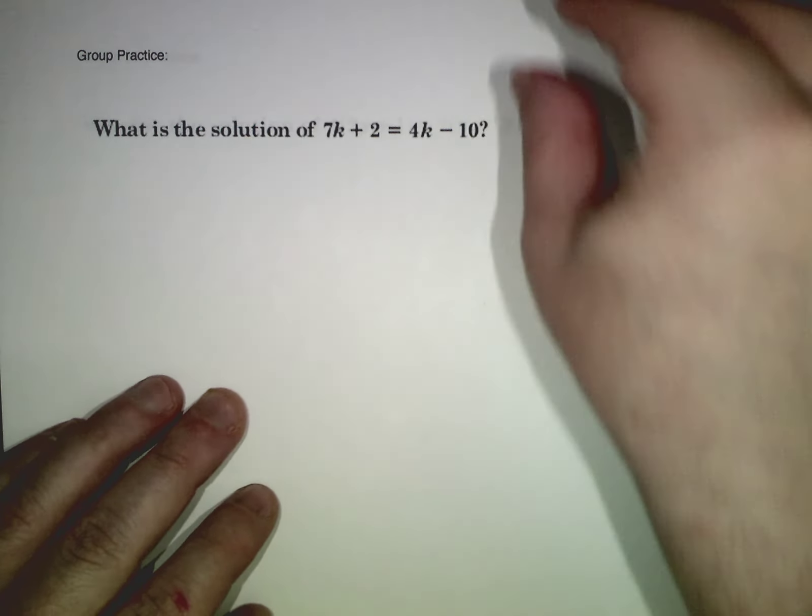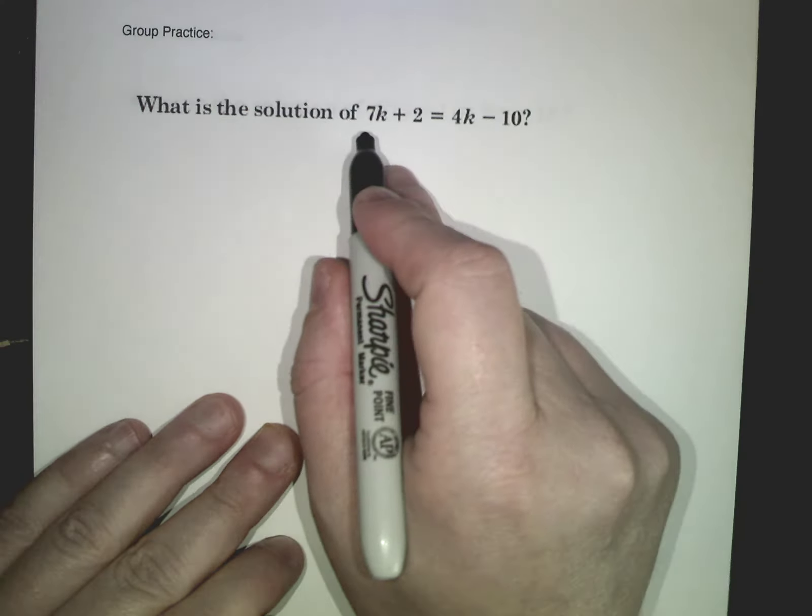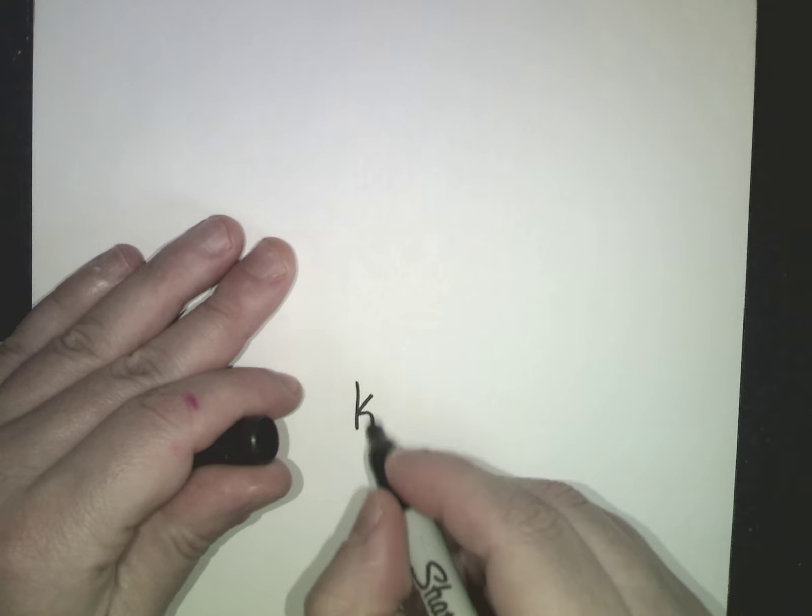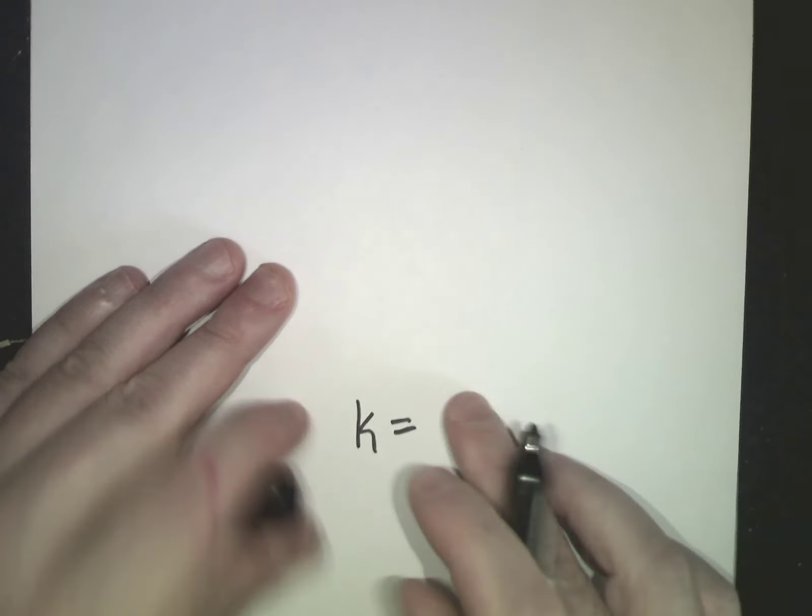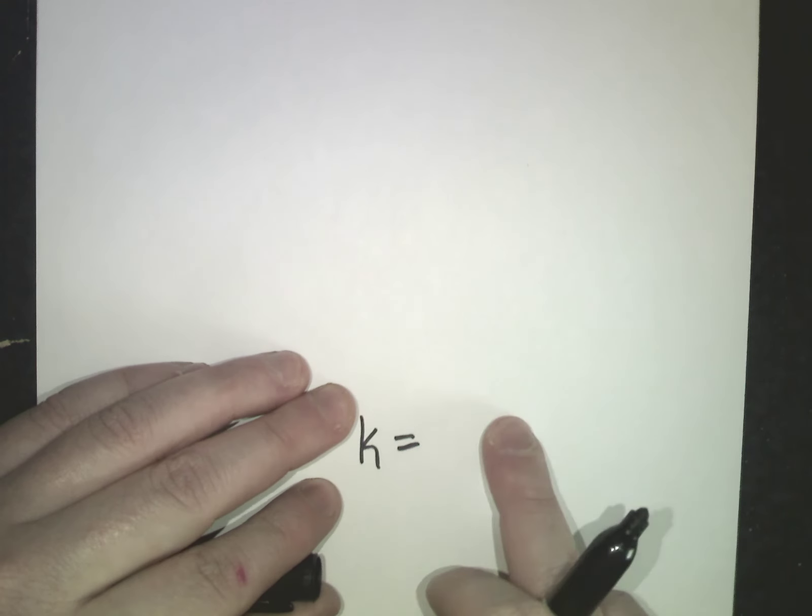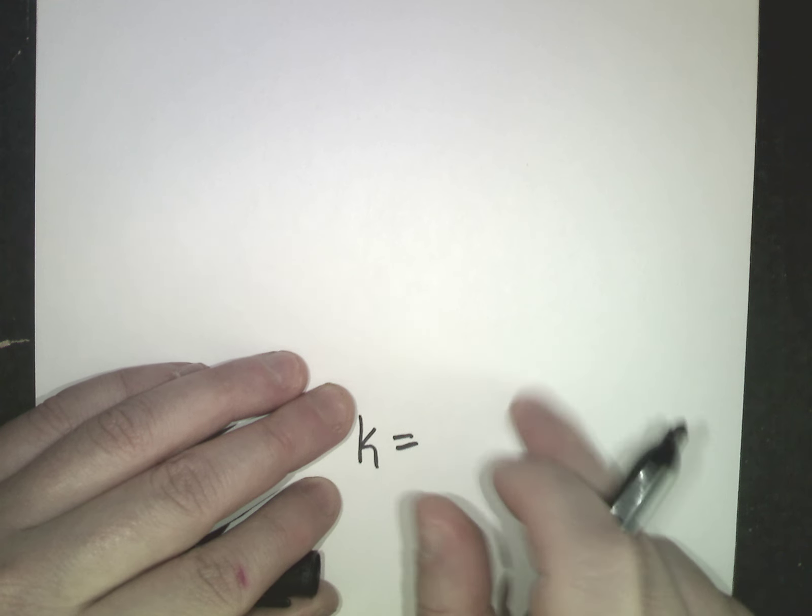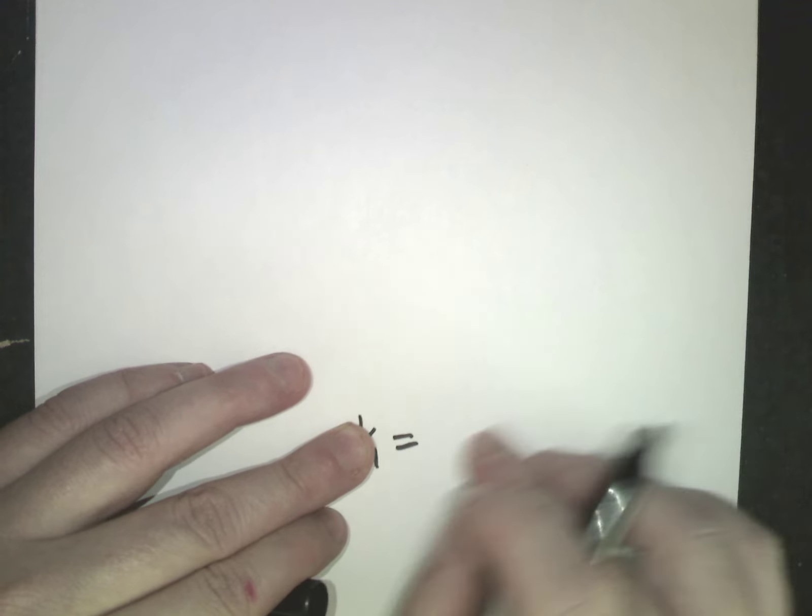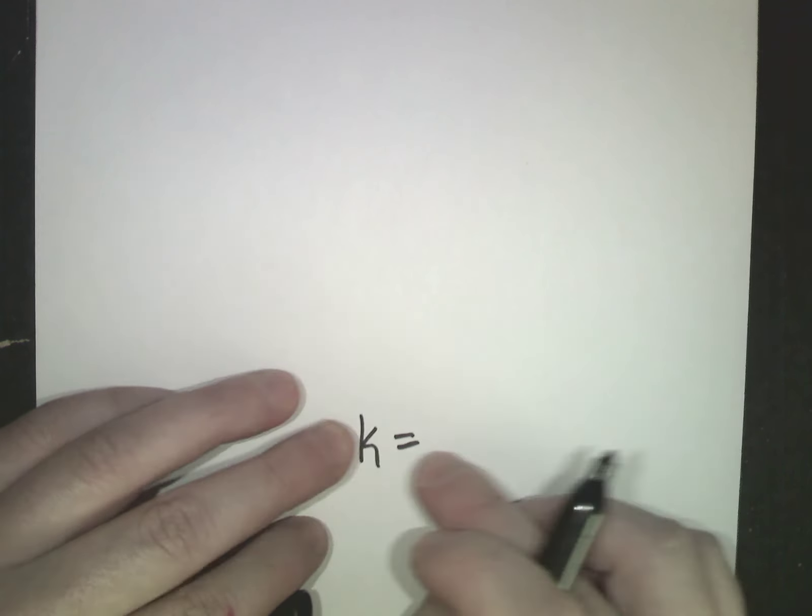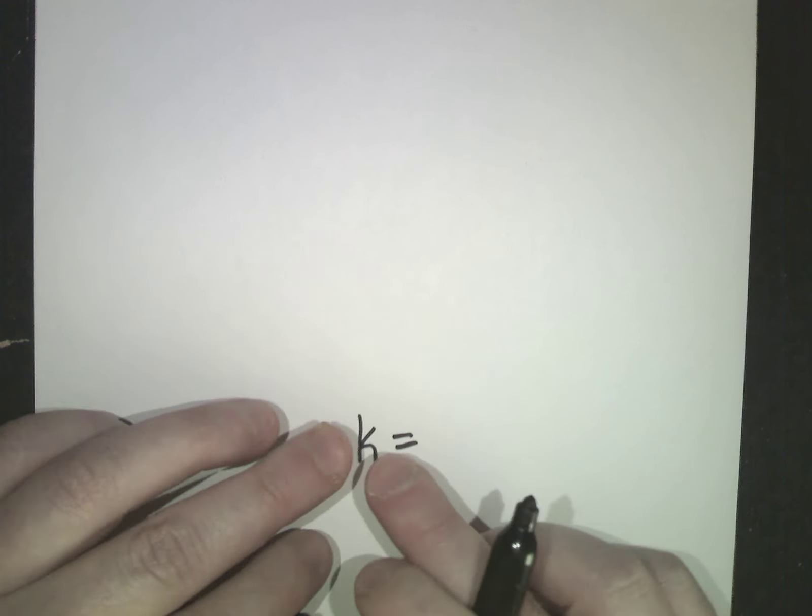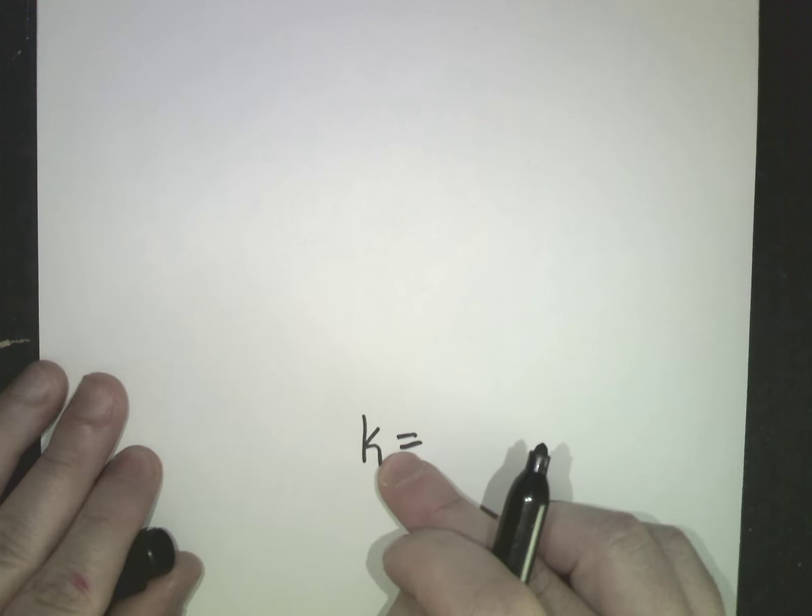The idea is your final answer when you're done should be, in this case, our variable is k. So I want to have k equals at the end. Now you notice this side is going to be a number, but there's going to be no k. My only k will be here on the left side with nothing else around it.